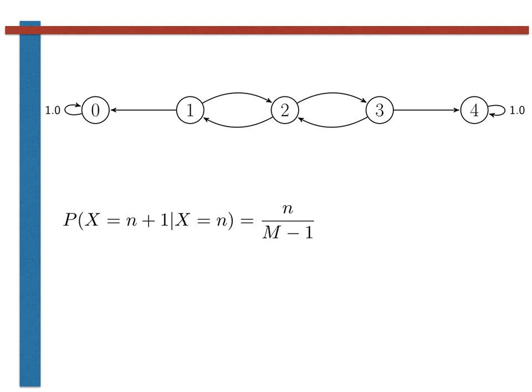For the chain shown at the top of this slide, which has five states, the probability of a transition from state 1 to state 2 is thus one-quarter. The probability of a transition from state 2 to state 3 is a half, and the probability of a transition from state 3 to state 4 is three-quarters.